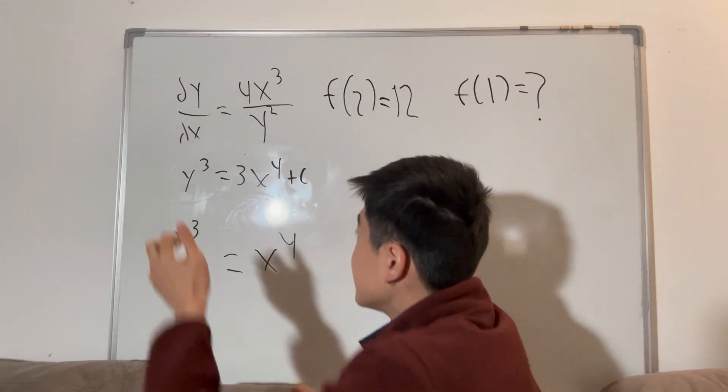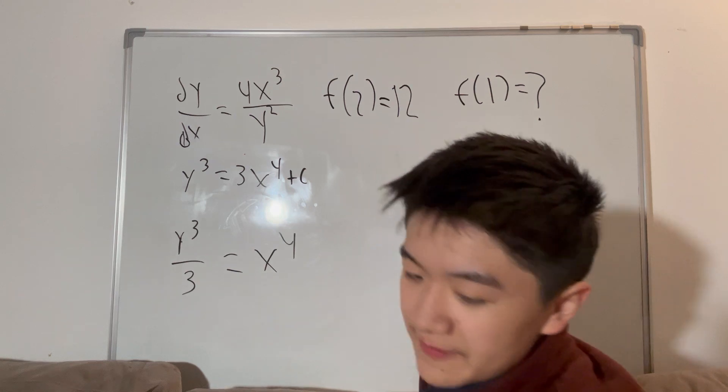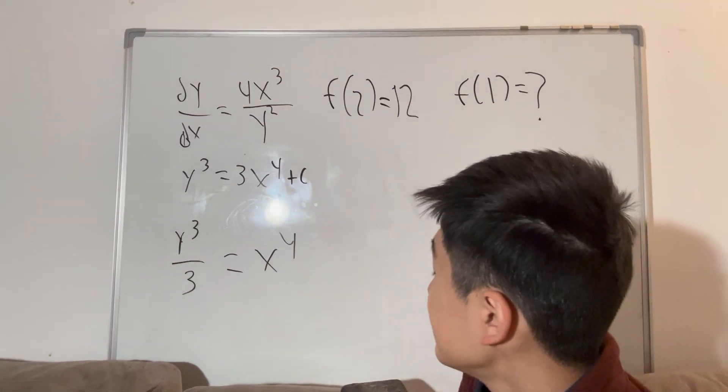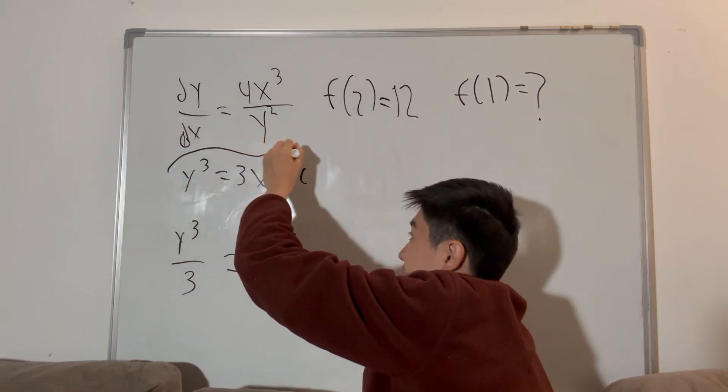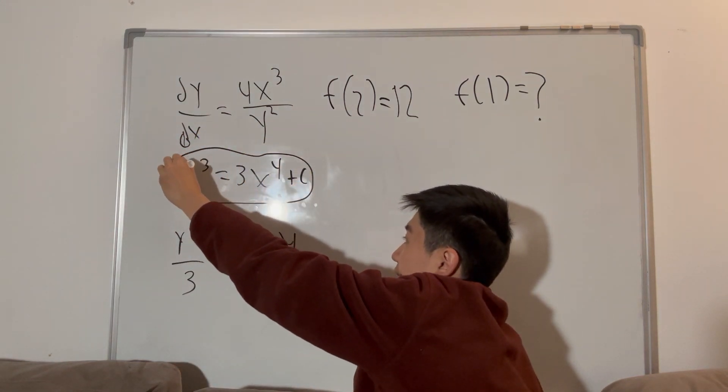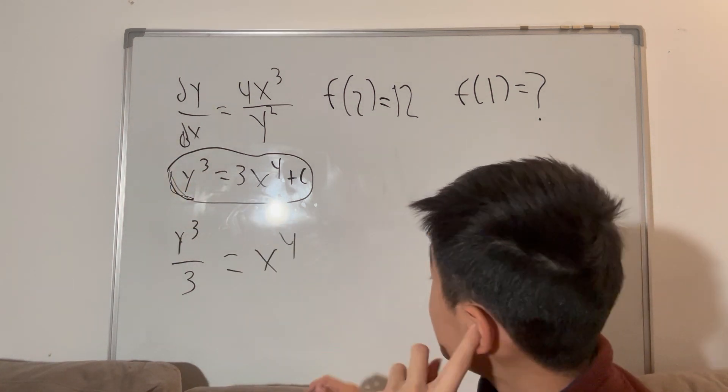So, previously in our last video, we found the original equation of f of x, which was y cubed is equal to 3x plus c. And we have c here because we don't know if the value had a coefficient in front of it or not.